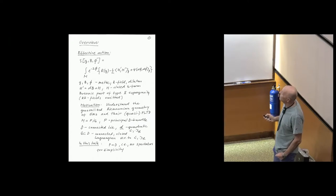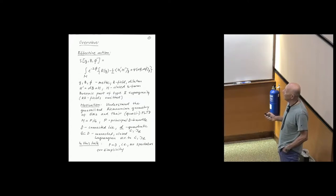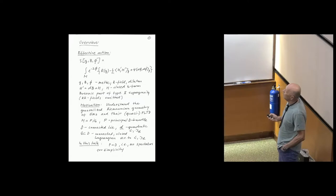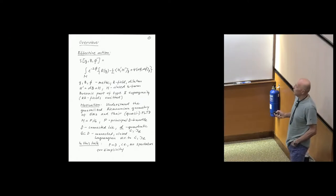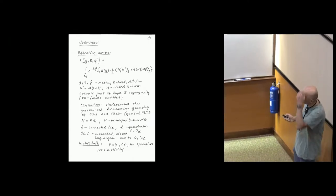In the special case where P is a principal D-bundle — so that's the base manifold — D is a connected Lie group with a quadratic Lie algebra, which means we have an invariant positive definite pairing on the Lie algebra, and G is a connected closed Lagrangian subgroup. Lagrangian means with respect to the pairing on D. For simplicity, when coming to the T-duality, I will restrict myself to the case where M is a point, so the total space is the group D itself, meaning I will consider no spectators.